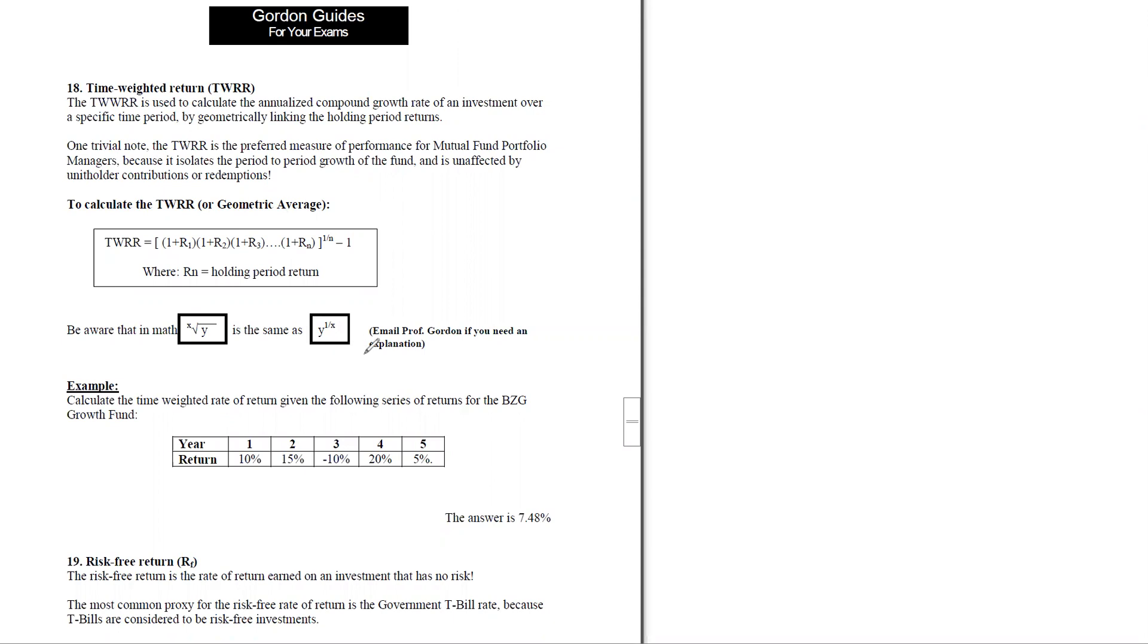Just to set the context here, this is looking at calculating rates of return or expected returns. One simple way is just to use the arithmetic average or the arithmetic mean. The arithmetic average would simply add up all of the data points to get the sum of all those data points and then divide by the number of data points.